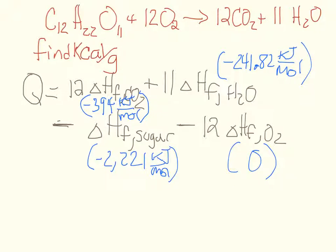So what I'm going to do now is, I'm going to go grab my calculator, and I'm going to multiply 12 by negative 394, and then I'm going to add that to 11 times negative 241, and then I am going to subtract negative 2221. Okay, so that's going to be pretty straightforward, I think. Just an algebraic operation. Okay, so I put all that together, and I get negative 5,167 kilojoules per mole.